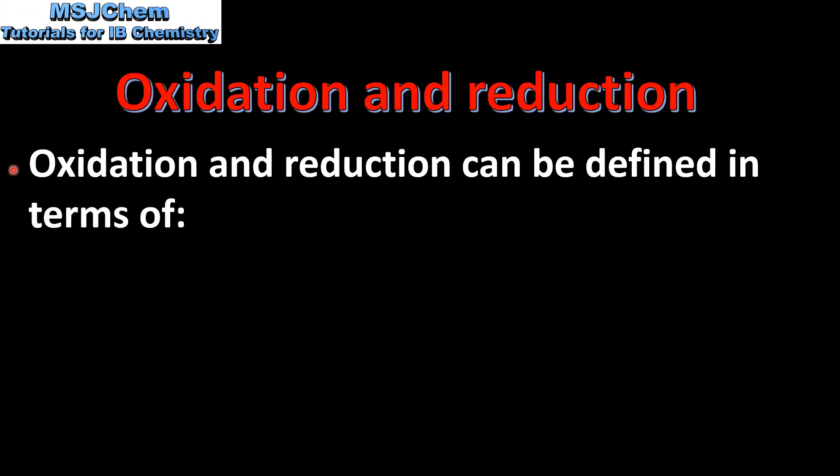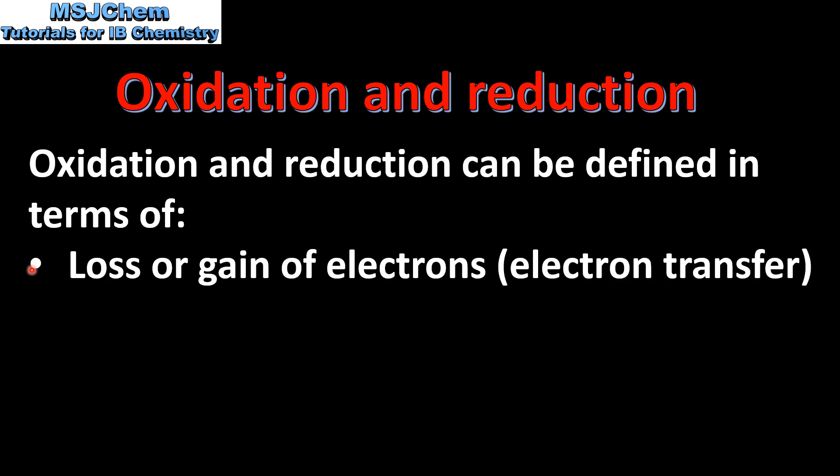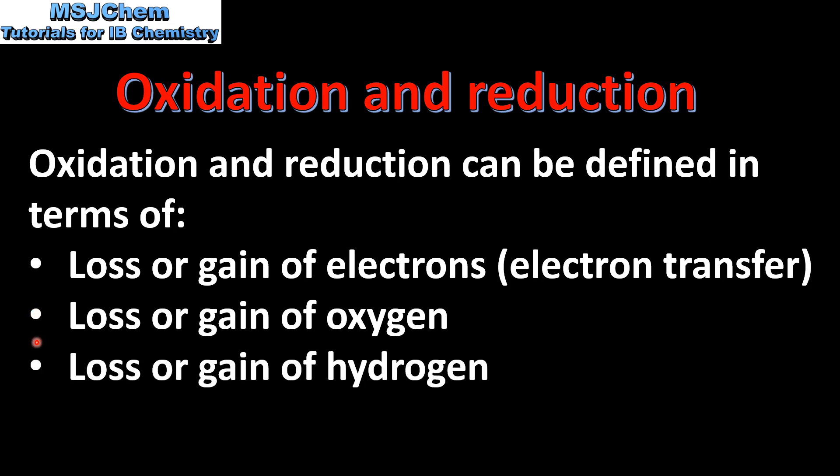Oxidation and reduction can be defined in terms of loss or gain of electrons which is electron transfer, loss or gain of oxygen, and loss or gain of hydrogen, and we'll look at each of these in more detail.